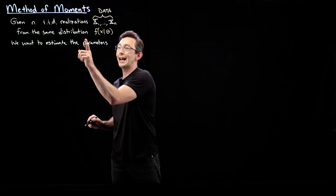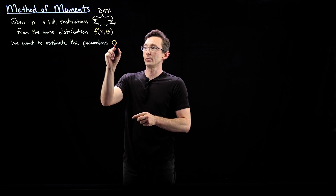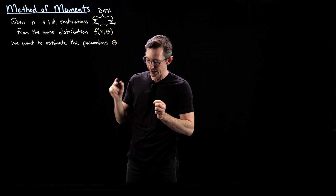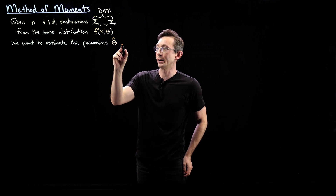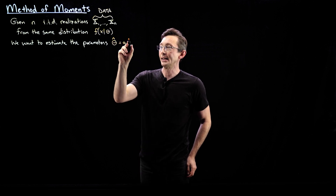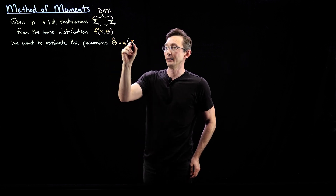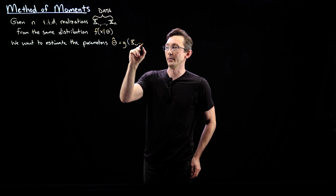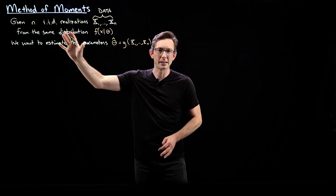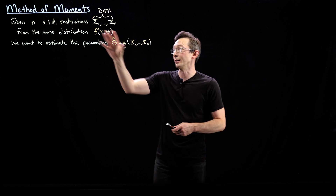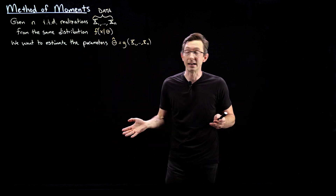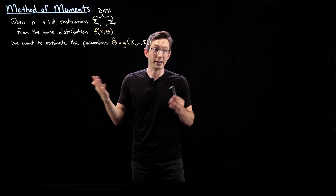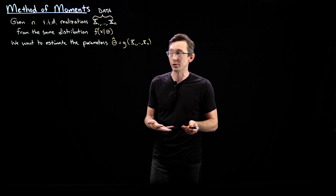We want to estimate the parameters, so we're going to call this estimate theta hat — some function of the data. This is just the general estimation problem; at this point it has nothing to do with the method of moments. This is just how we state the problem of estimating parameters of a probability distribution.